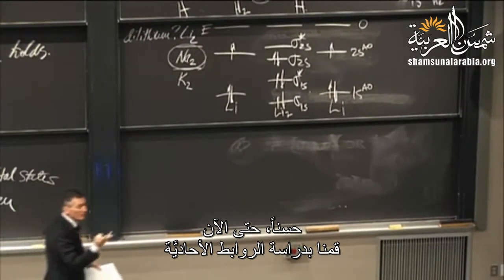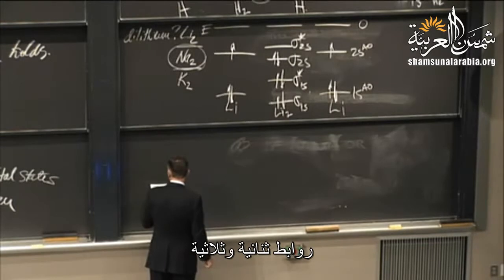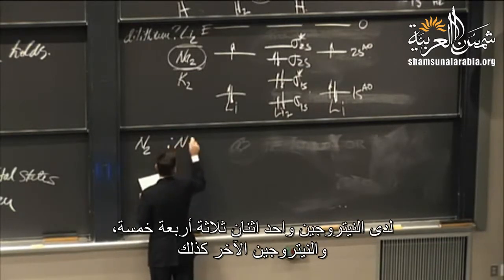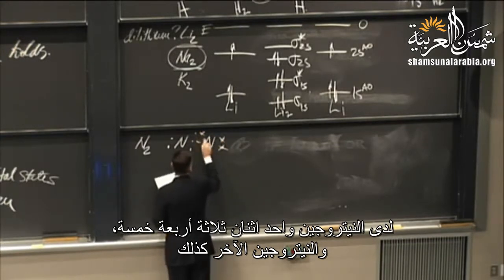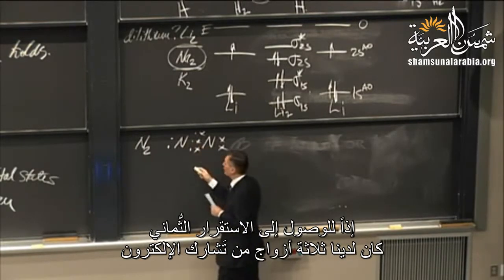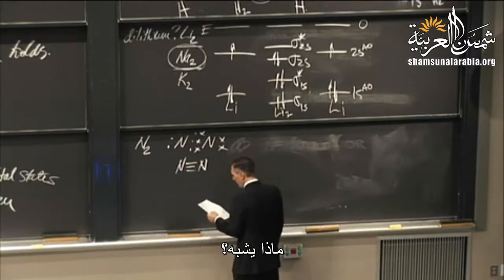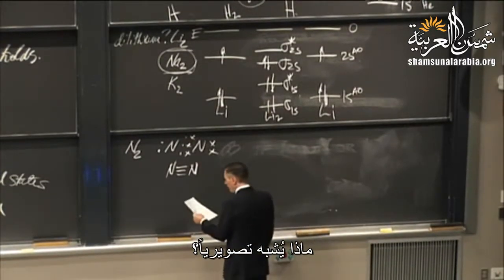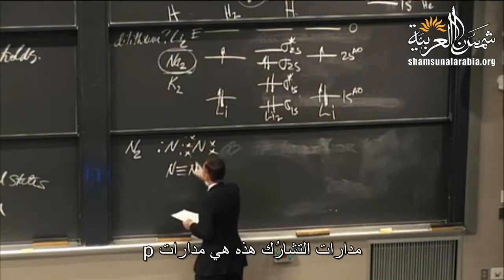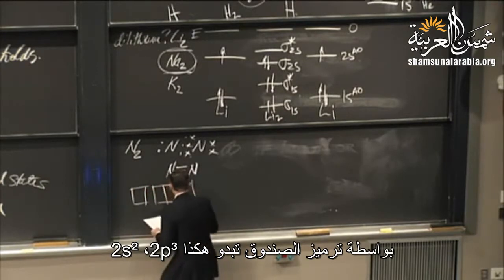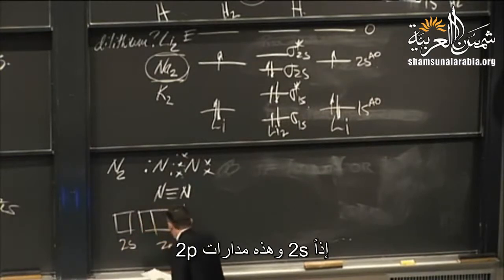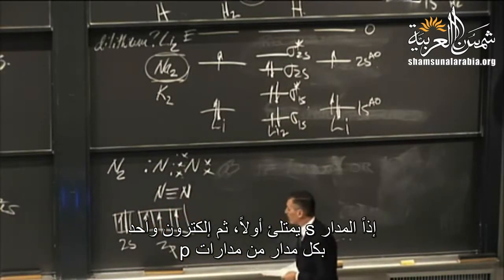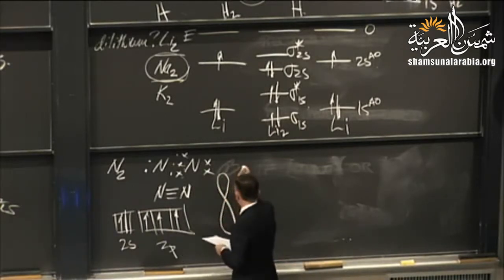So far we've only looked at single bonds. Now let's look at multiple bonds — double and triple — using nitrogen N2, which gives us the triple bond. Nitrogen is 2s² 2p³, so I have the 2s filled and lone electrons in each of the three 2p orbitals. These p orbitals are shaped like figure-eights with two lobes each. The node — the point of zero electron density in the middle — is where the electron, behaving as a wave, can still transfer energy from one lobe to the other without ever being at the nucleus.